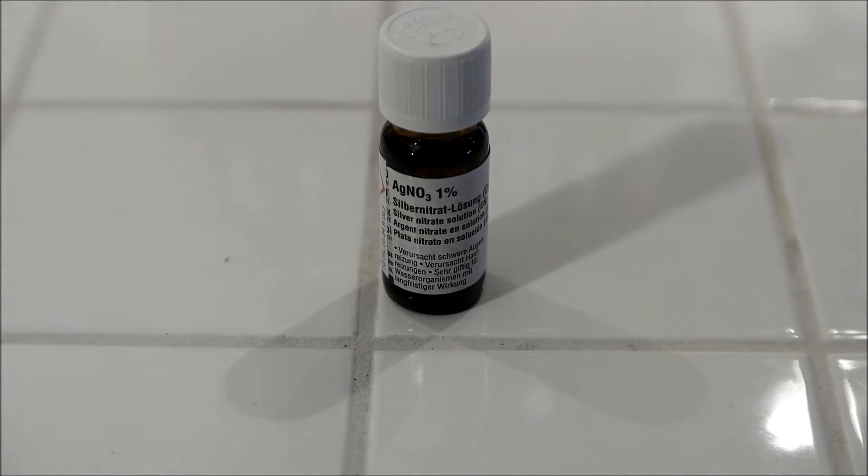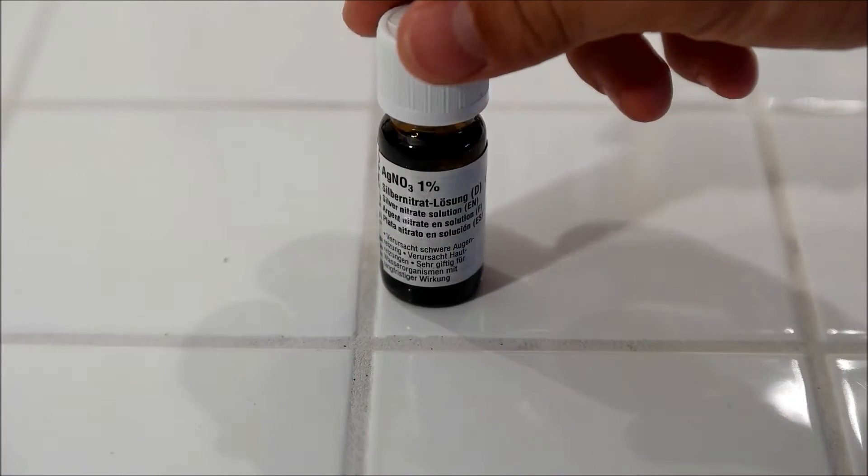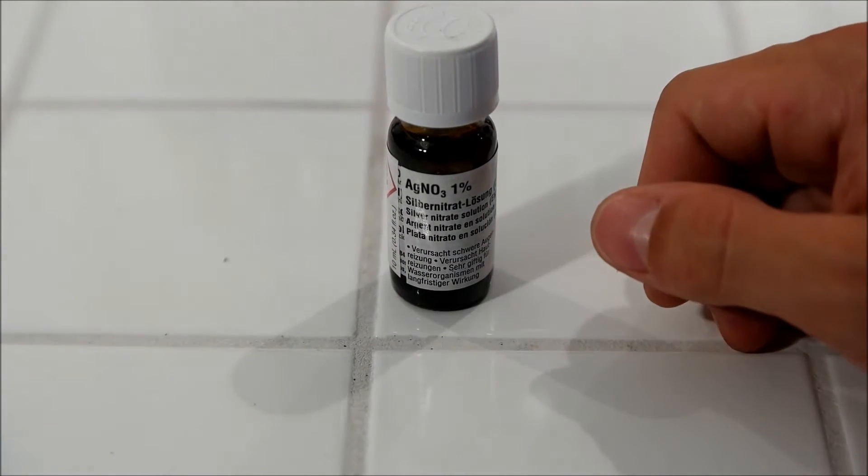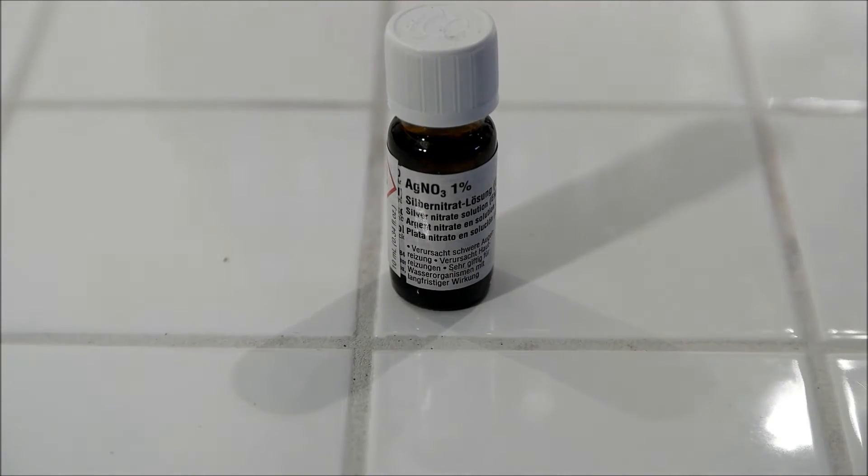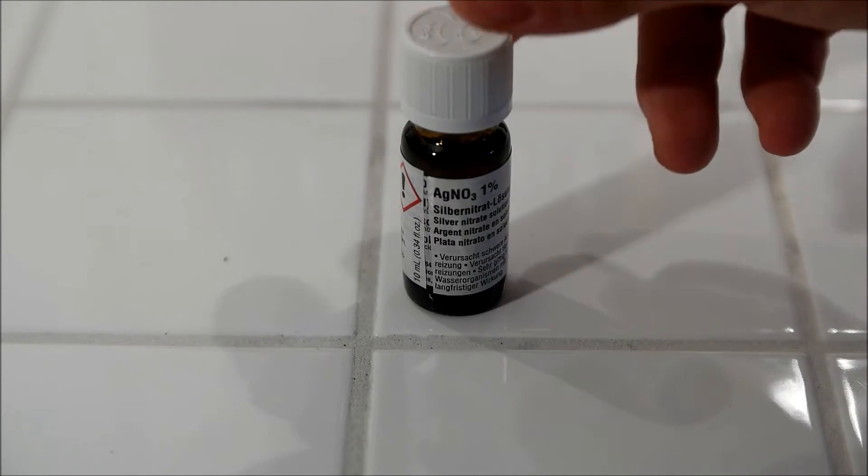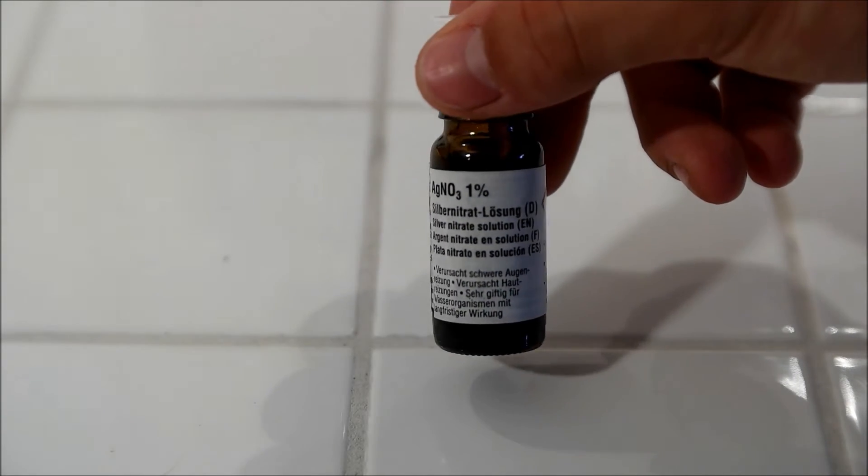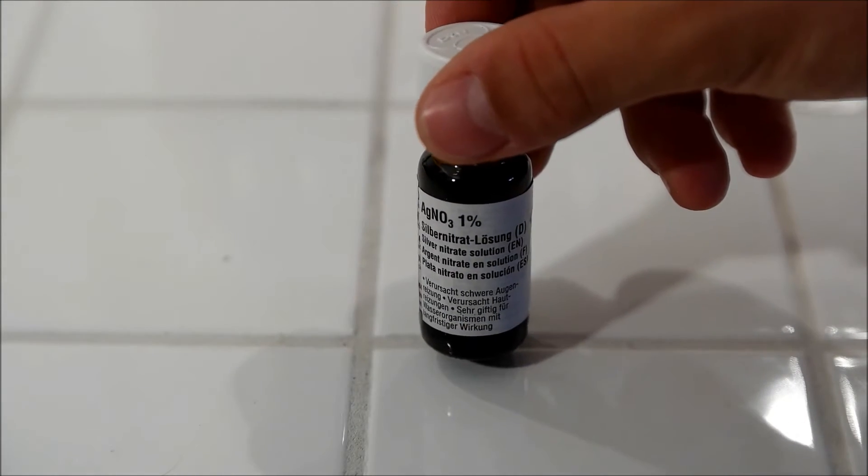Today I show you how you can use a silver nitrate solution, this one has around 1%, as a detection reagent for chloride salts. To get this, I just dissolved pure elemental silver in concentrated nitric acid and made a 1% solution of it.